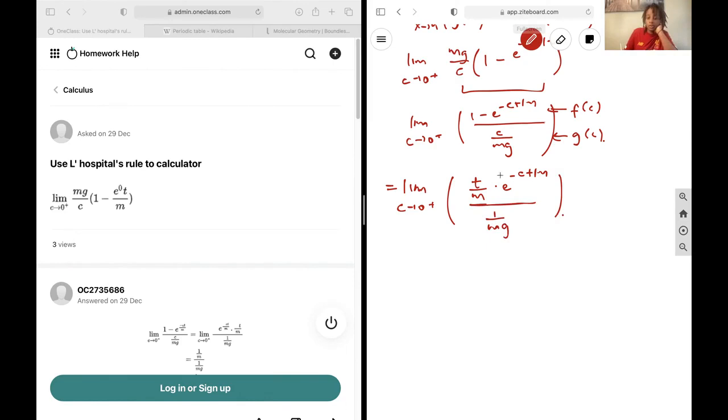Okay, so let's take the limit first. The limit as this approaches zero from the positive side will become one, and so what we'll be left with is t over m over one over mg.